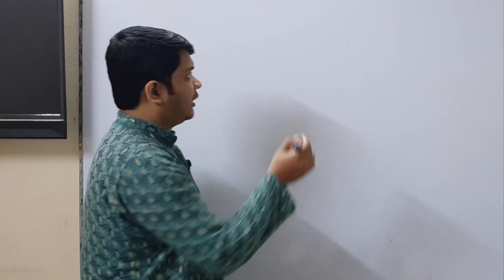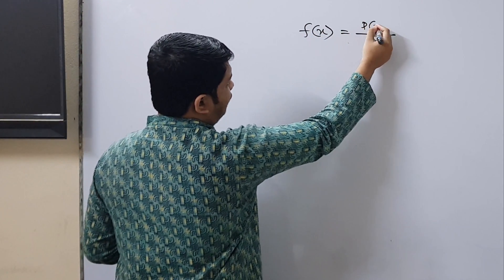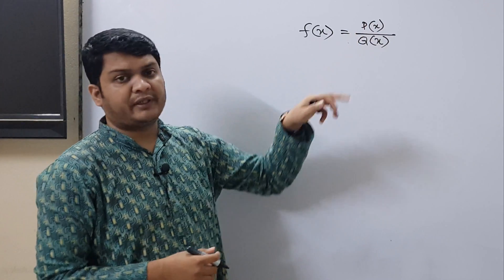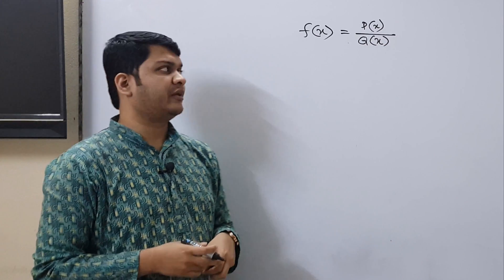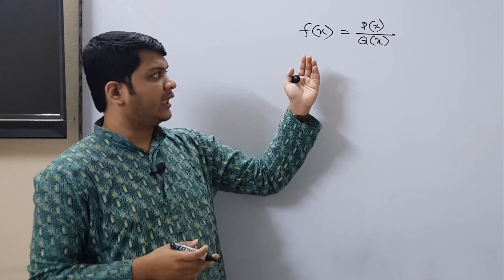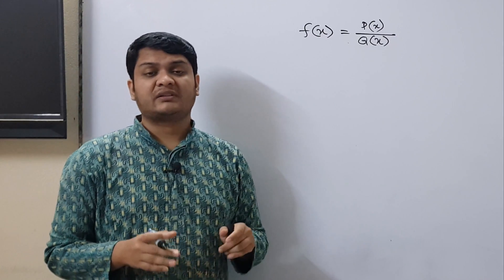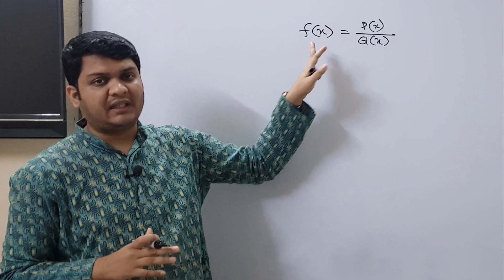A rational function is a function that is the ratio of two polynomials. If we have a function f which is equal to p divided by q, here p is a polynomial of the variable x and q is another polynomial of the same variable x. We can call this function a rational function. Now we will see the application of infinite limits in rational functions.